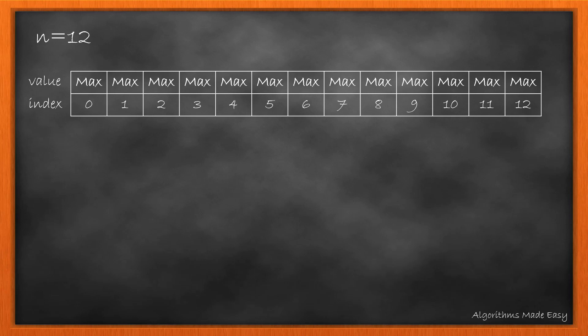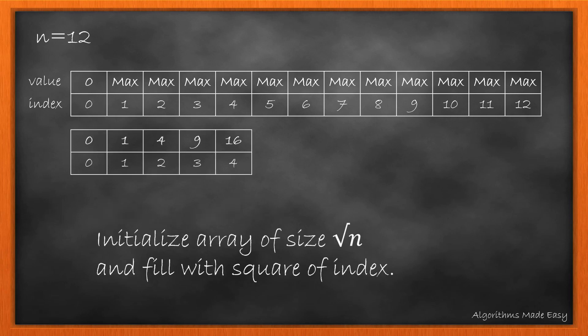Let's take n as 12. We will initialize array of n plus 1 and update values to max of integer. Now we update value at 0 to 0. Now we initialize an array of size square root of n plus 1 and fill it with the square of their indexes.